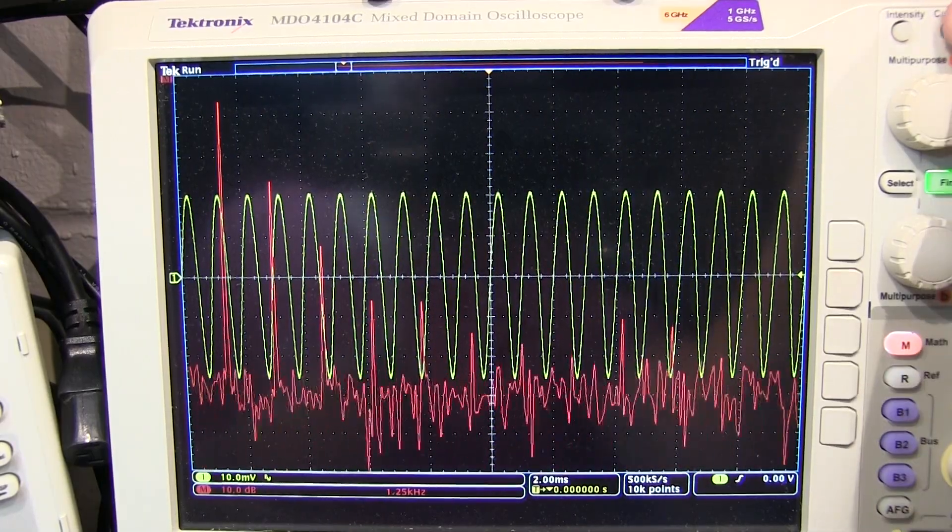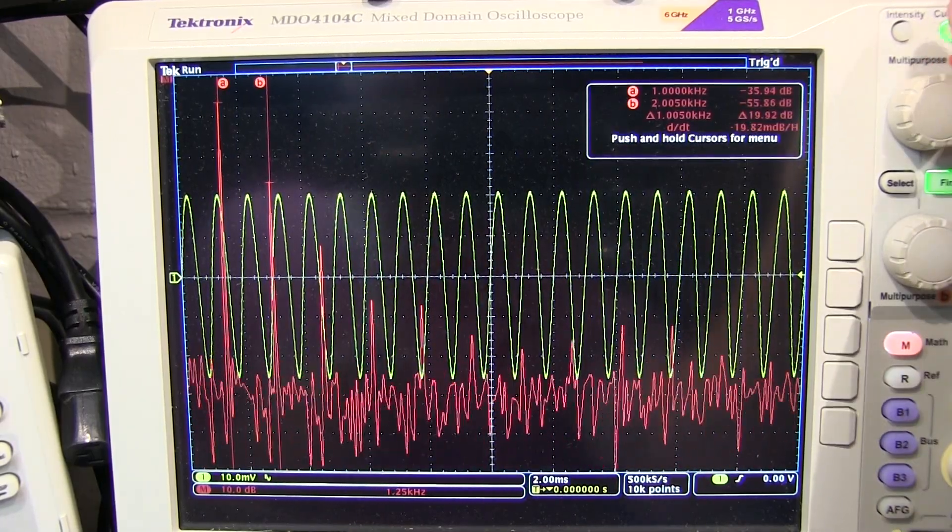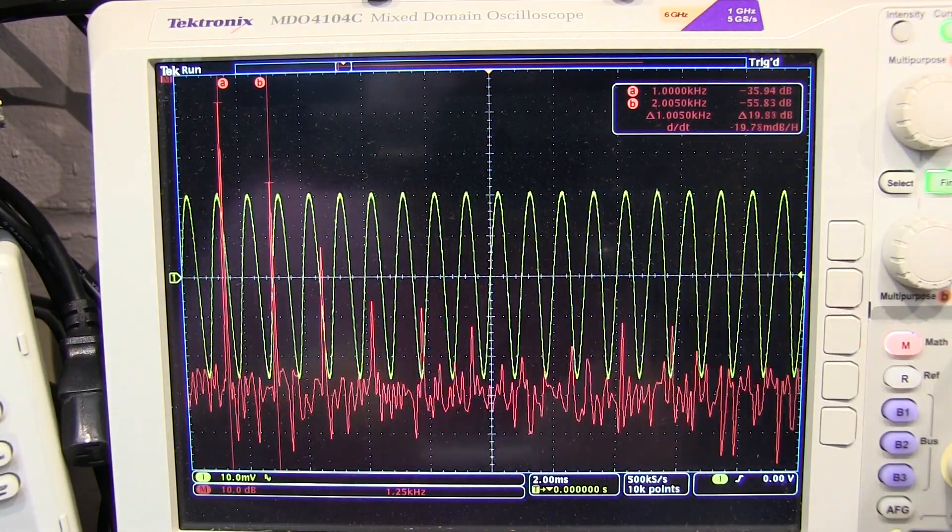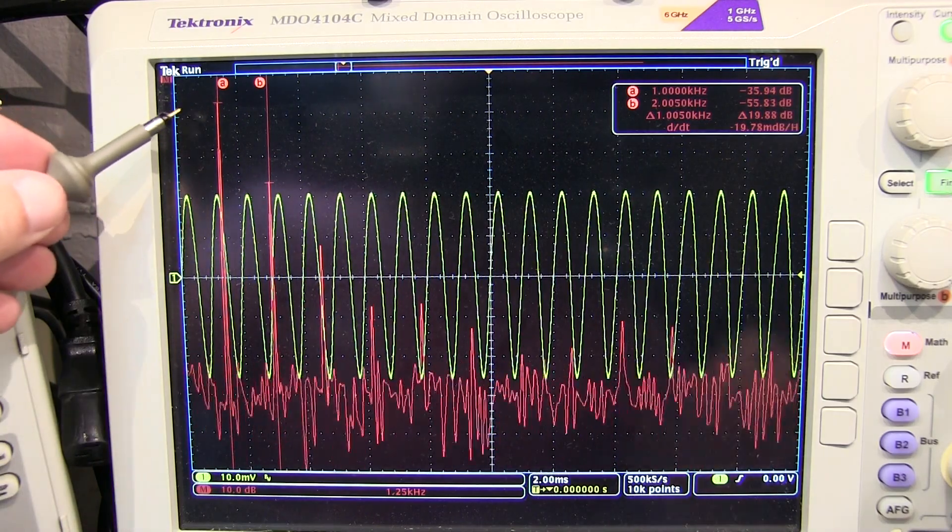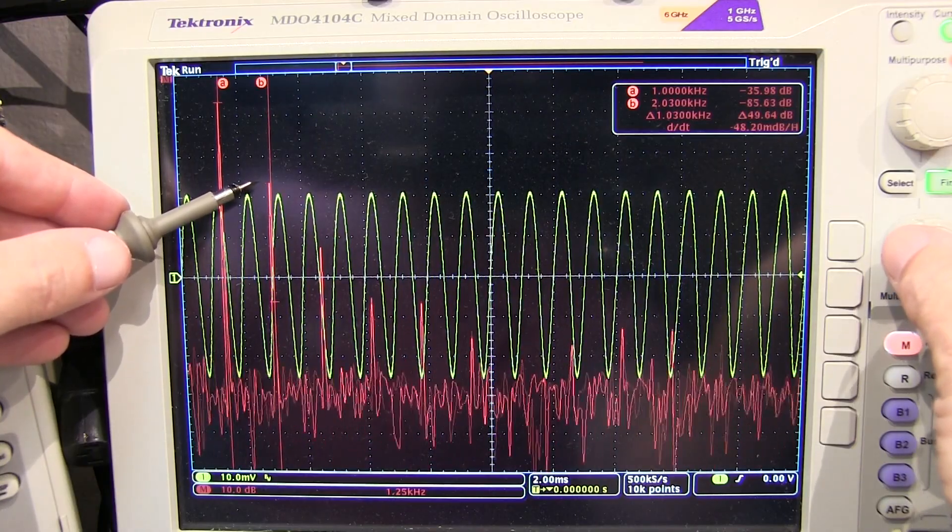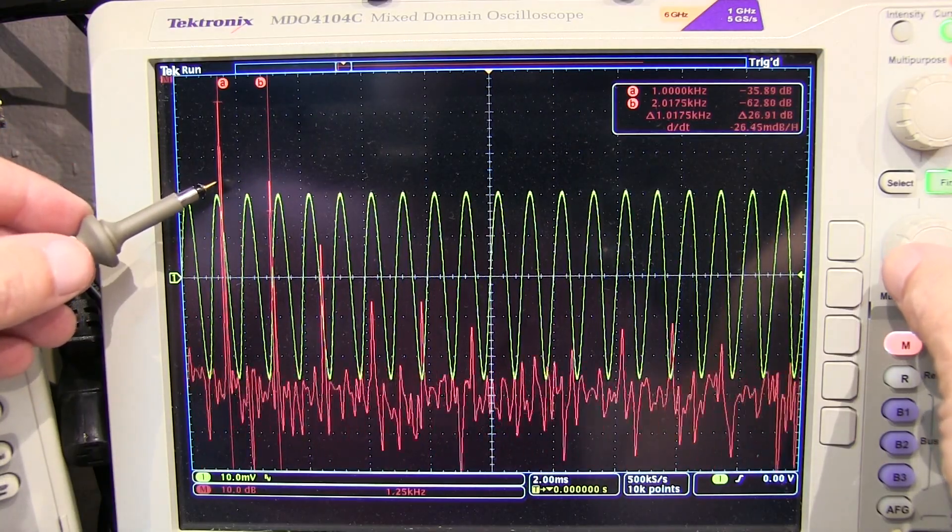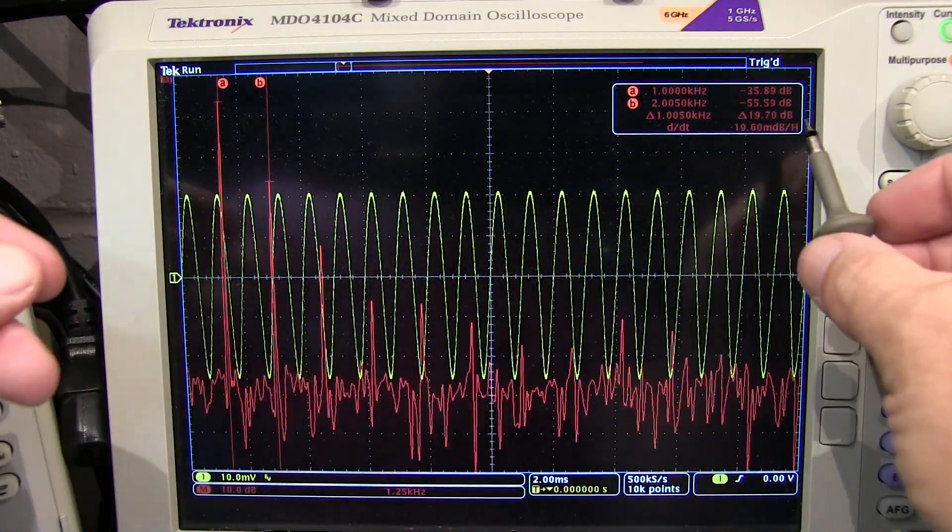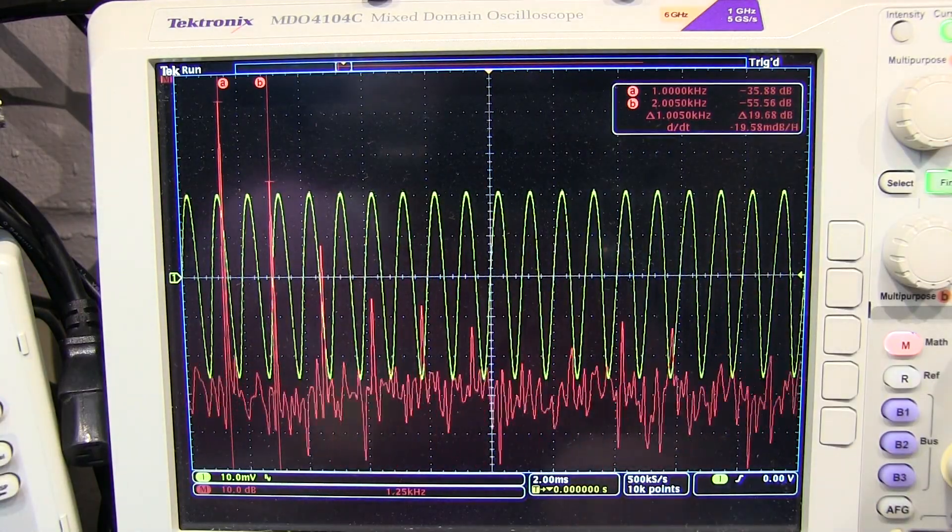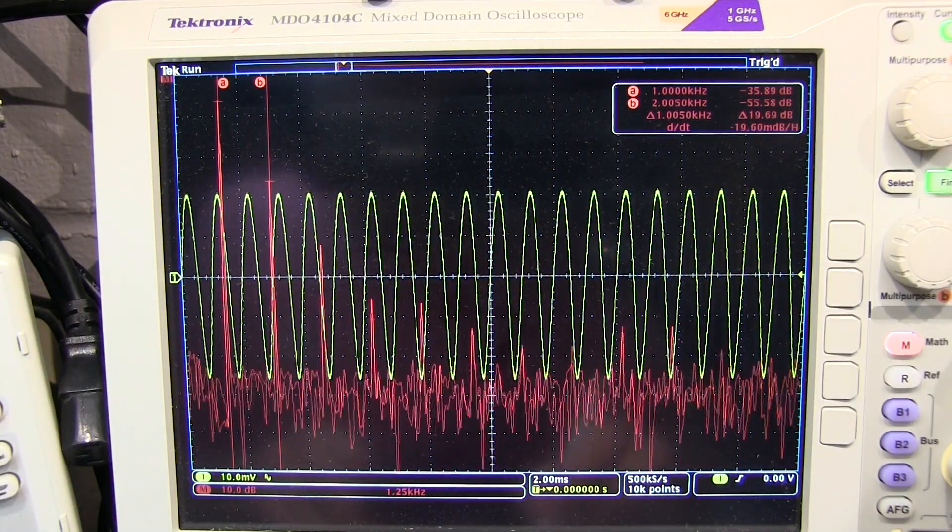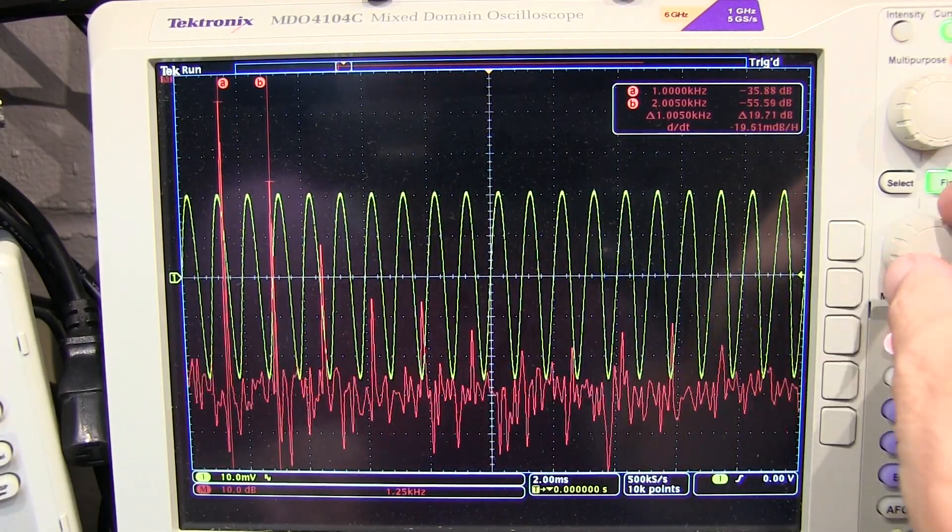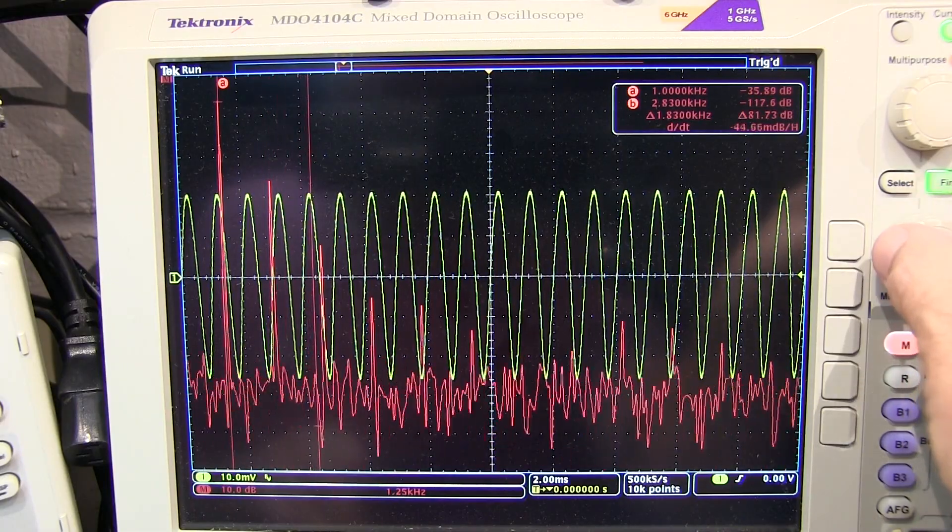So we'll simply use some cursors to measure these dBc values. So if I position cursor A right on top of the fundamental right here, it looks like I've got B already sitting on top of the second harmonic. Let's reposition that back on the second harmonic here again. And we can see that's about 19.7 dB down. So we can record that value of the dBc value of minus 19.7.